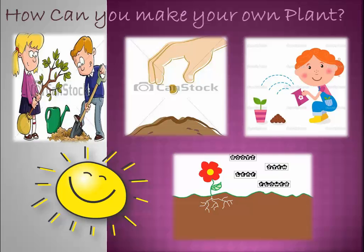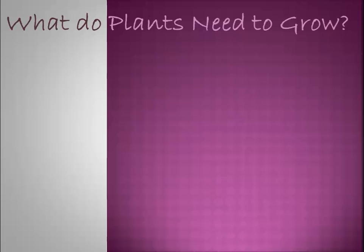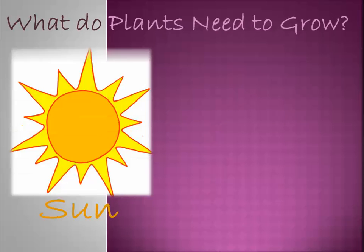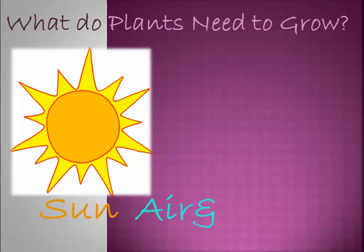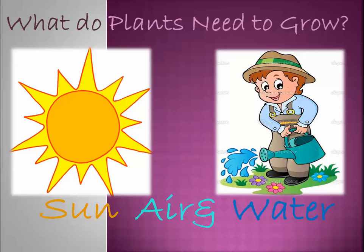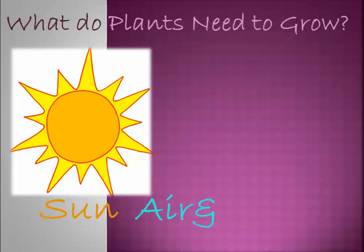Now KG1, we are going to learn a new lesson — what do plants need to grow? The plant needs sun, air, and water to grow. So the plant needs sun, air, and water. We have to put our plant in the sun, with air, and water it every now and then.